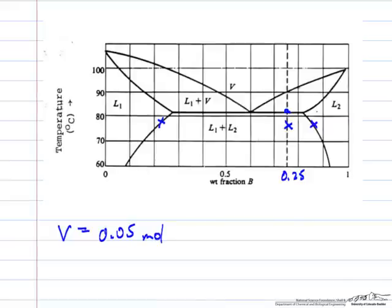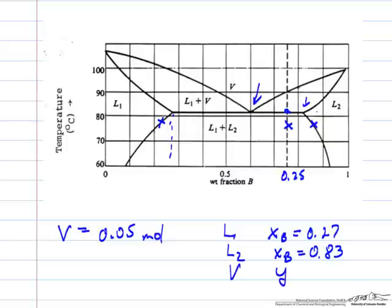At this point we have liquid 1 with mole fraction of component B equal to about 0.27, and we have liquid 2 with a mole fraction of about 0.83. Once we get to this temperature we start getting evaporation until all of liquid 1 disappears. The vapor that's in equilibrium with the two liquids has a mole fraction of B equal to 0.6.